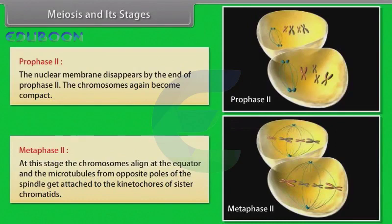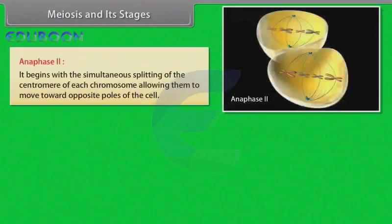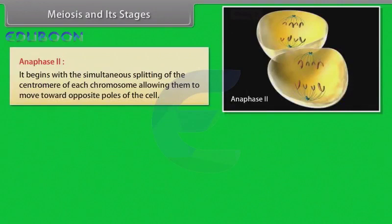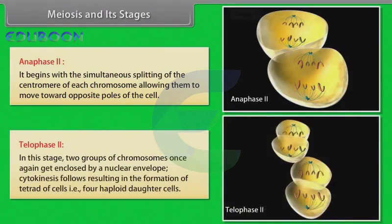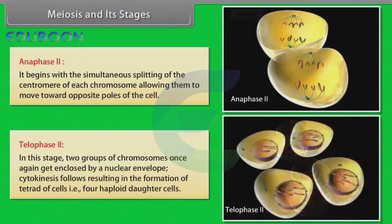Similar to mitosis, metaphase two is followed by anaphase two. Anaphase two begins with the simultaneous splitting of the centromere of each chromosome, allowing them to move toward opposite poles of the cell. The last stage of meiosis is telophase two. In this stage, two groups of chromosomes once again get enclosed by nuclear envelope. Cytokinesis follows, resulting in the formation of tetrad of cells, that is four haploid daughter cells.